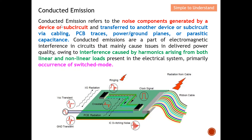Conducted emission refers to the noise component generated by a device or sub-circuit, which then transfers to another device or sub-circuit via cabling or PCB trace. For example, the noise source moves along the cable or PCB track and finally reaches the victim, causing degraded performance. This is the definition of conducted emission.